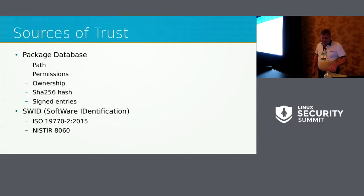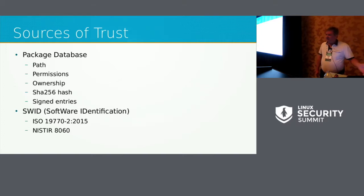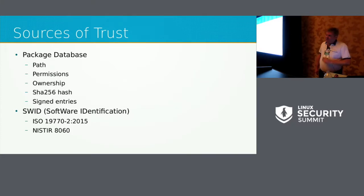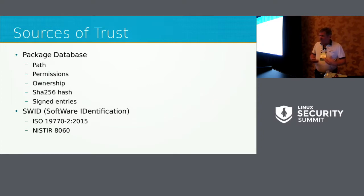There's another source of information that's new and on the horizon called SWID — Software Identification. This is covered by an ISO standard, and NIST also has information reference IR 8060, which details their take on the ISO standard. SWID is being driven into all Common Criteria protection profiles — one by one they're asking manufacturers to include SWID information for all software they're shipping. Today it's kind of sparse, but over time it's going to be everywhere.